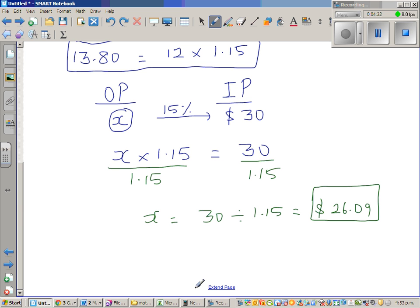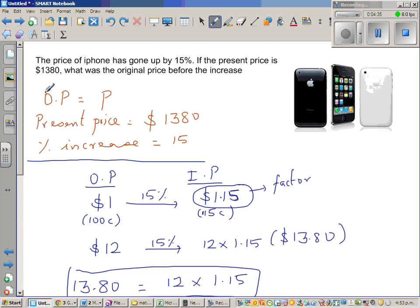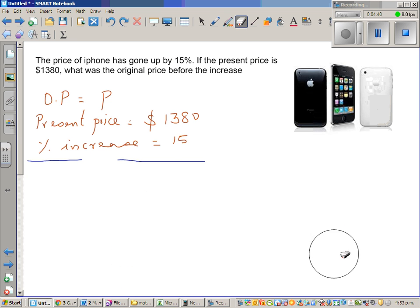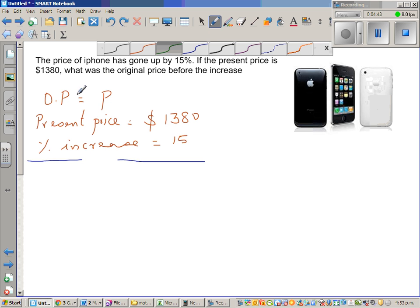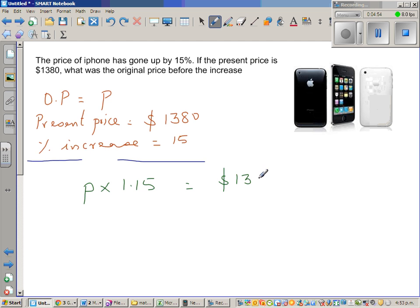So let us look at this example. We can say if P is the original price and the increase is 15%, I can say P times 1.15 is nothing but the increased price, which is $1,380. So to get rid of this 1.15, I'll divide this by 1.15. So I'll also divide this by 1.15. So P is 1,380 divided by 1.15.